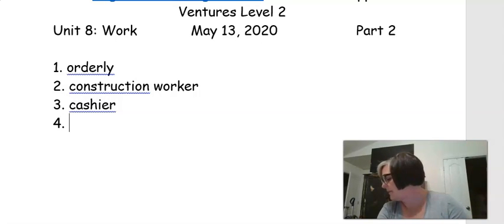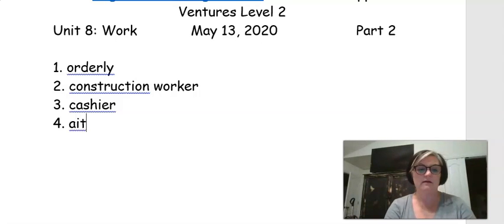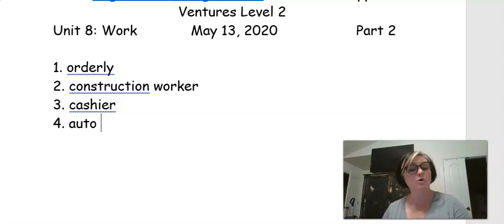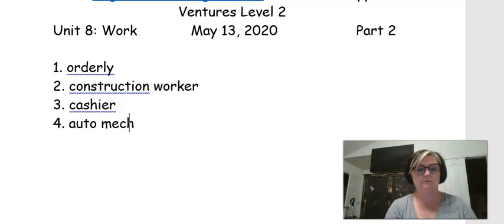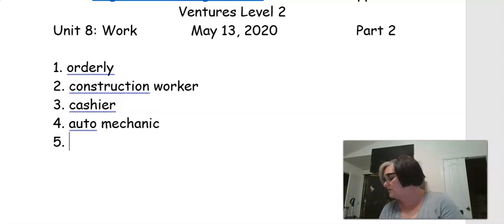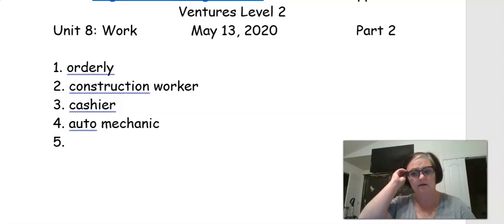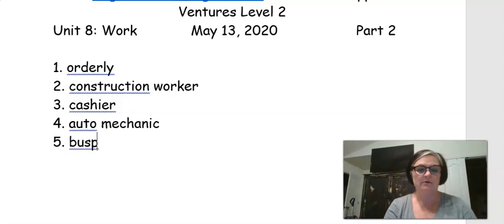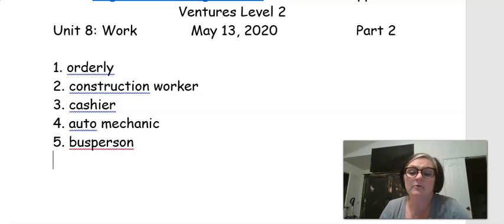Number three, I can handle money and I like math. That describes our cashier. Number four says, I repaired cars for seven years. That's an auto mechanic because they repair domestic and foreign cars. Number five, I cleared tables in a restaurant last year. Who works in the restaurant? The bus person. Remember, a bus person, they are the people that after you're finished eating, they come get all your dirty dishes and wipe down the tables and get it ready for the next customers.